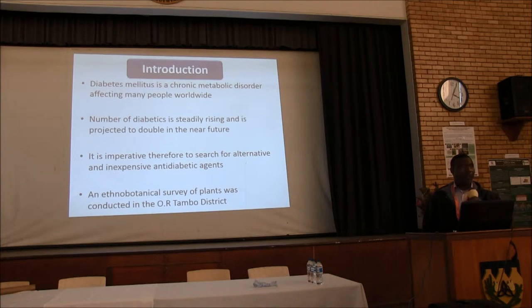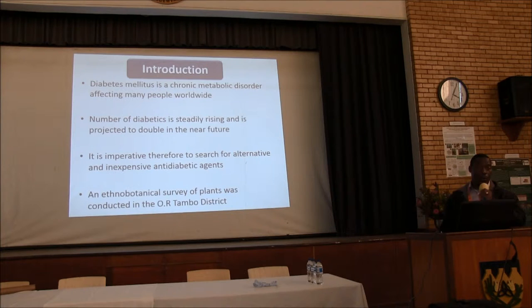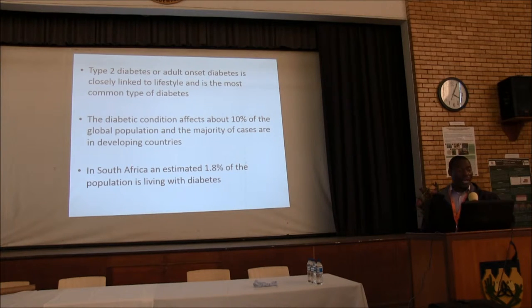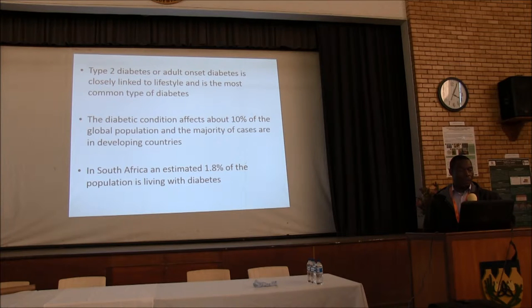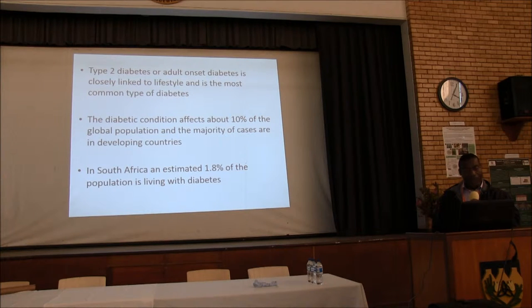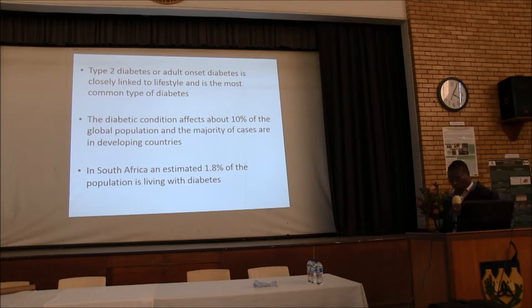That prompted us to carry out an ethnobotanical survey of plants used for the management of diabetes in the ORT region. Type 2 diabetes, or adult onset diabetes, is closely linked to lifestyle and is the most common type. The condition affects about 2% of the global population, and in South Africa an estimated 1.8% of the population is living with diabetes — a small percentage, but the population is huge.